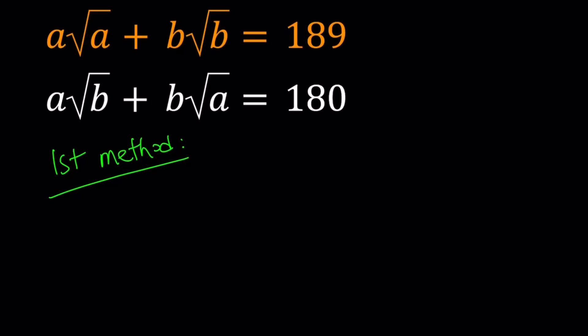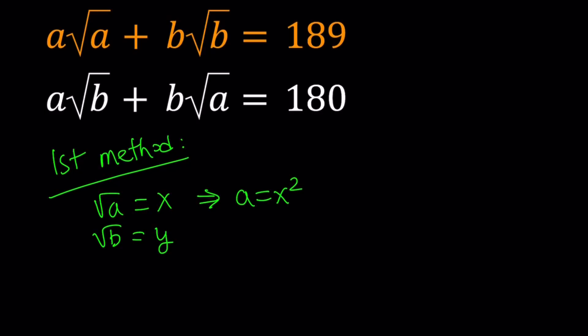For my first method, I'm going to be using substitution. Let's get rid of the radicals first by calling square root of a: x, and square root of b: y. This implies that a needs to be positive and b needs to be positive. So from here, we get a equals x squared and b equals y squared, and we want x and y to be positive.